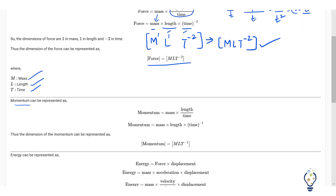Now let us see how to find the dimension formula for momentum. Momentum is nothing but mass into velocity. Velocity can be written as length by time, which can be written as length into time inverse. Therefore, these are all fundamental quantities, and momentum's dimensional formula is MLT⁻¹.